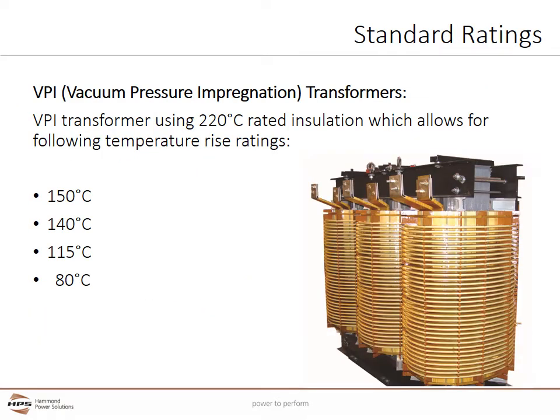VPI, or vacuum pressure impregnation transformers, commonly utilize a 220°C insulation system. VPI transformers using this 220°C insulation system allow for a variety of temperature rise ratings, with the most common being 150°C. Additional ratings include 140°C, 115°C, and 80°C.